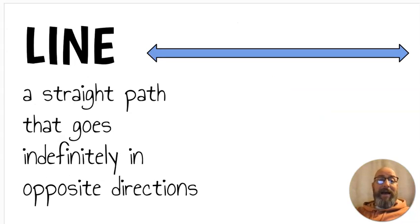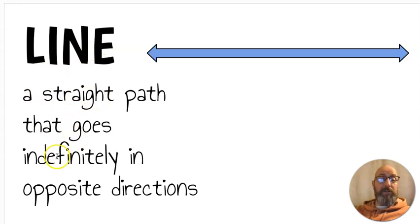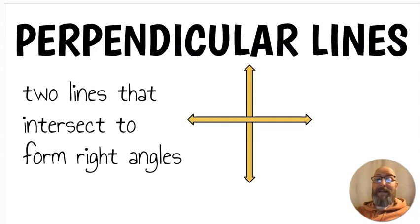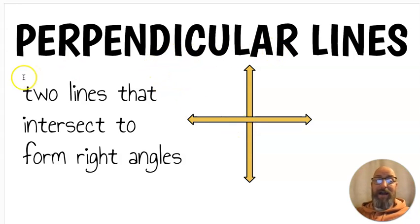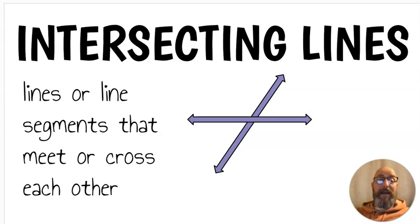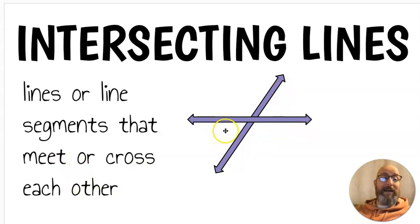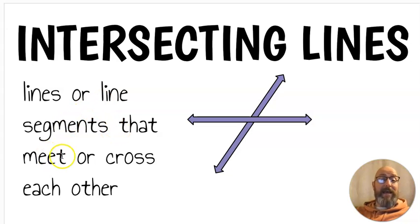Next we have the word line. A line is a straight path that goes on indefinitely — that means it never ends — in opposite directions. I put arrows there because it never stops. Next we have perpendicular lines. Perpendicular lines are two lines that intersect — which means they connect — to form right angles. I have right angles being formed everywhere the lines meet. Sometimes lines don't make right angles, they just connect — those are called intersecting lines: lines or line segments that meet or cross each other.